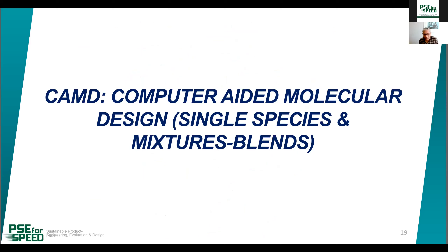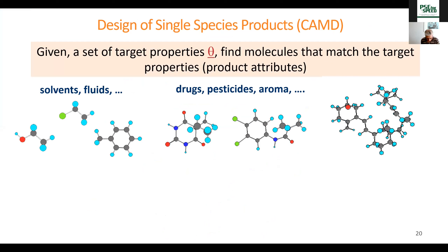Now I'll give some theory on single-species and mixture blend design — computer-aided molecular and mixture design, CAMD. The problem can be formulated as: given a set of target properties theta, find molecules that match those properties. That's the product attributes, defined in terms of properties with given values. We can do this by trial and error — take a molecule, calculate properties, check — but that will take a long time and can be blind trial and error with no indication of direction.